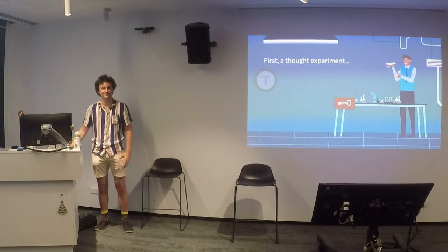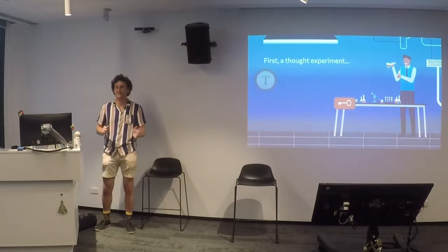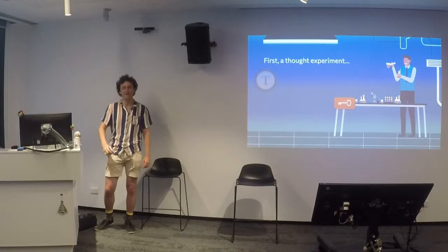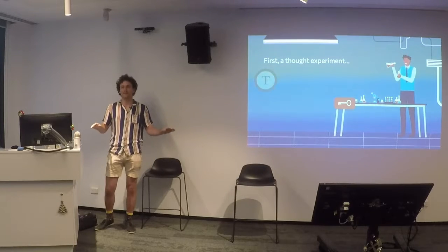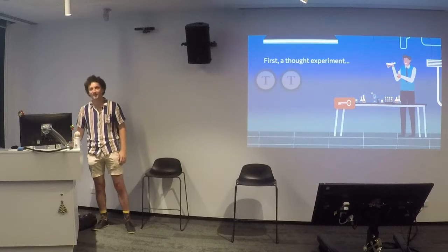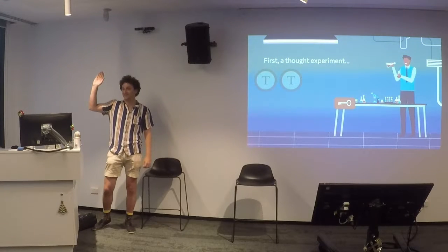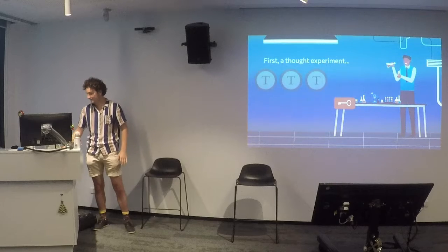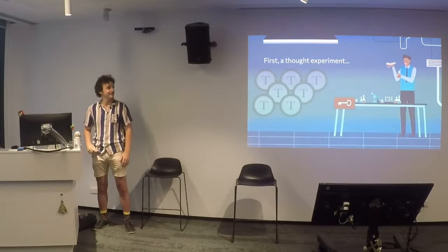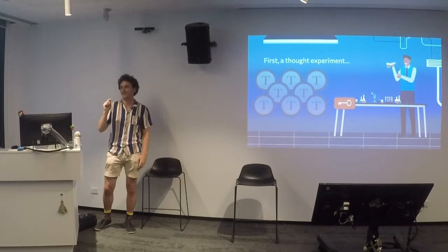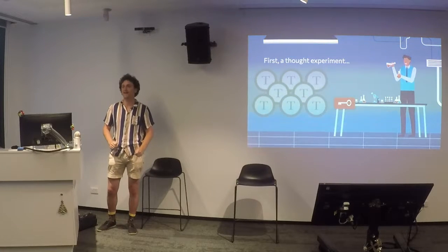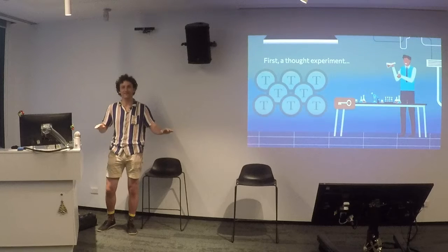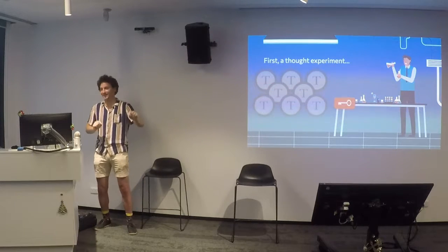So the first coin gets flipped, lands tails. Now we're going to do it again. He keeps flipping the coin — gets another heads, then another tails, then five more tails in a row. At this point he's going to say the same thing: who reckons it's going to be heads? Who reckons tails? Who reckons it's still the same probability? We've got about an even split now, which is exactly what we're looking for.